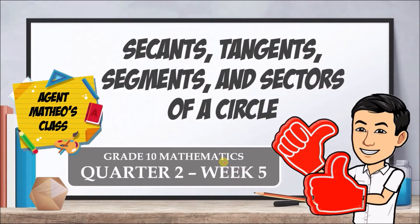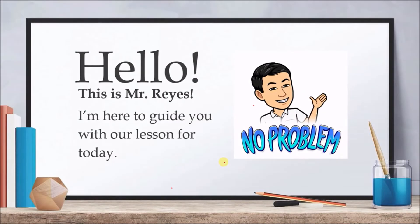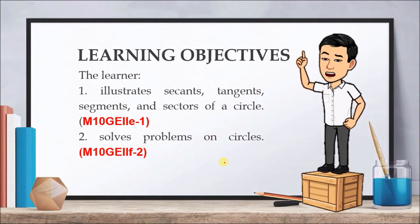This is Agent Mateo's class. Our lesson for today is secants, tangents, segments, and sectors of a circle. This is the second quarter, week number five of Grade 10 Mathematics. This is Mr. Reyes guiding you for our lesson today. Our learning objectives are: the learner illustrates secants, tangents, segments, and sectors of a circle, and later on we are going to solve problems involving these parts of our circle.